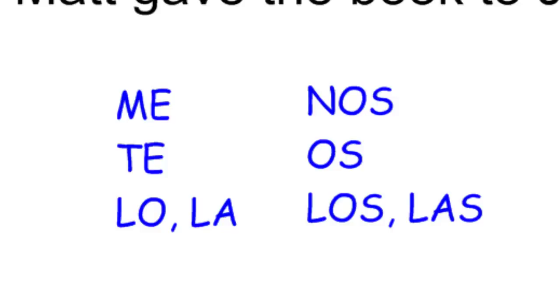Let's look at the direct object pronouns in Spanish, because we've got several. We have: me (me), te (you), lo and la (both mean it), nos (us), os (y'all, used in Spain), and los and las which are the plural of lo and la.